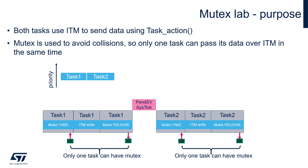The first operation is wait for mutex. Then, once the mutex is taken, the task will perform some write operation over the ITM interface. At the end, it will release the mutex to allow the next task to do these actions.